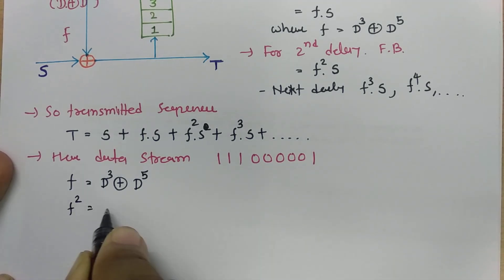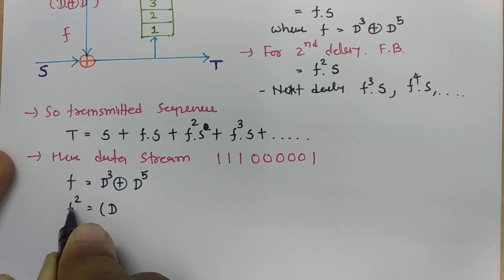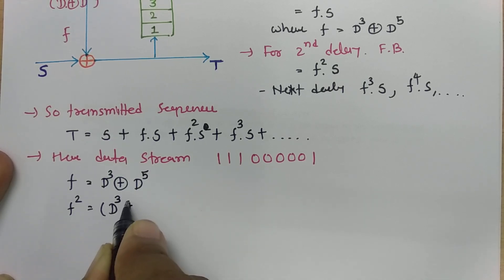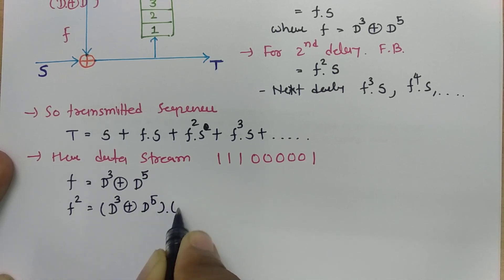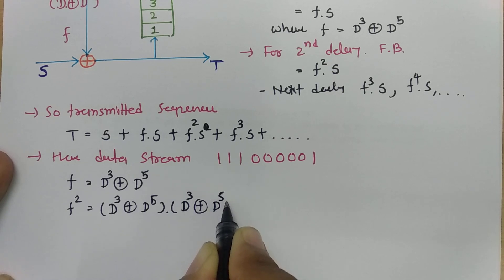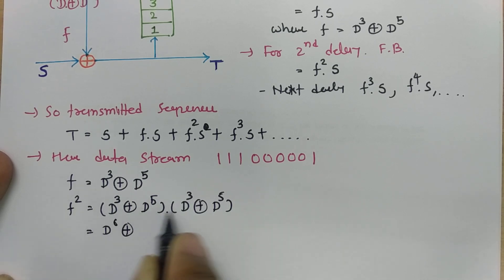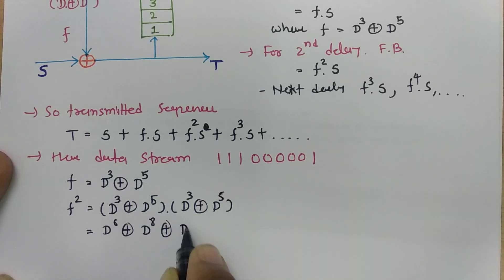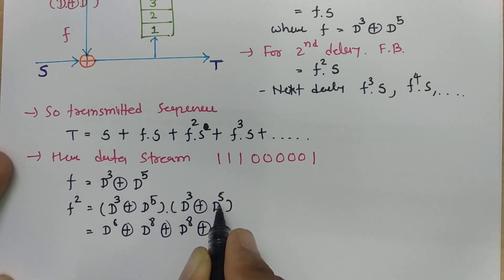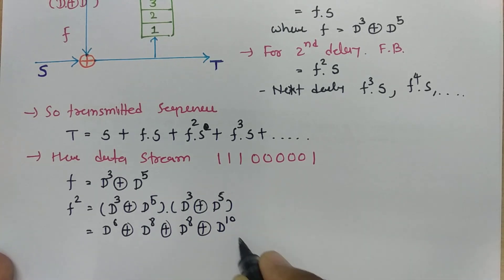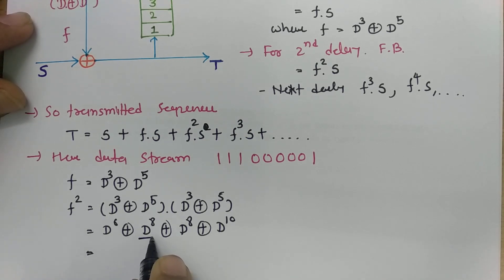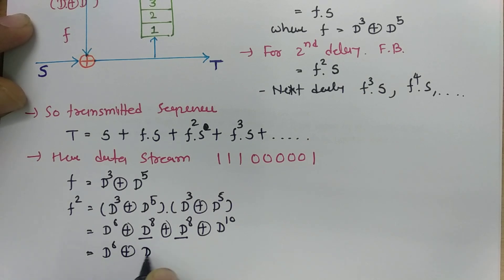Now to calculate f², all we need to do is multiply f into f. So that will be (d³ mod-2 sum d⁵) into (d³ mod-2 sum d⁵). If you multiply these two, that will be d⁶ mod-2 sum d⁸, again mod-2 sum of d⁸, plus d¹⁰. Since d⁸ and d⁸ cancel each other in modulo-2, the resultant will be d⁶ mod-2 sum d¹⁰.